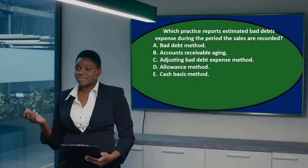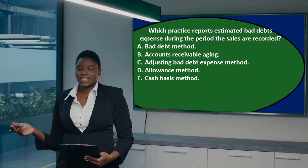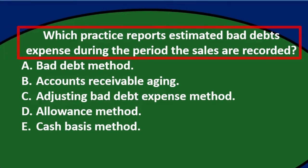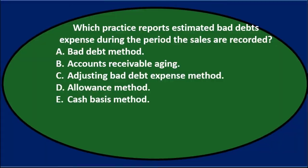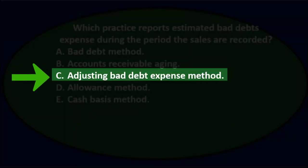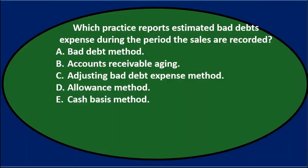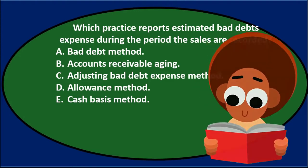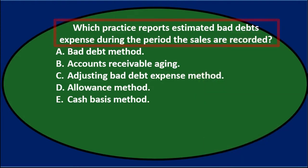In this presentation we will take a look at multiple choice questions related to receivables. First question: which practice reports estimated bad debts expense during the period the sales are recorded? Options: A) bad debt method, B) accounts receivable aging, C) adjusting bad debt expense method, D) allowance method, E) cash basis method. We'll go through these using the process of elimination.